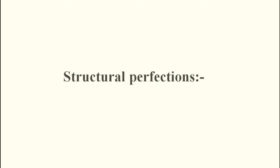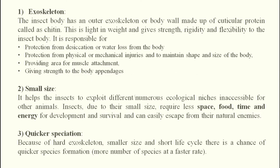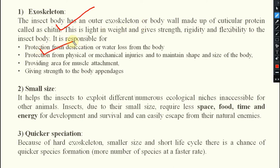First, we will discuss structural perfection. Some key points are: exoskeleton, small size body, quicker speciation, wings, six legs, and compound eyes. The insect body has an outer exoskeleton — also called the body wall or integument — which serves different functions: it prevents water loss and desiccation, provides physical and mechanical protection, prevents entry of pathogens, and provides area for muscle attachment, giving strength to the body.